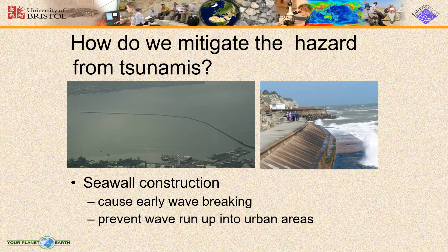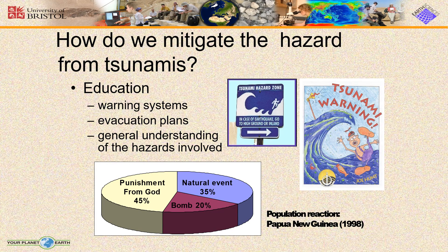How do we mitigate the hazard from tsunamis? Here there are two good diagrams shown. We can also do it by seawall construction — this causes early wave breaking which prevents wave run-up into urban areas.